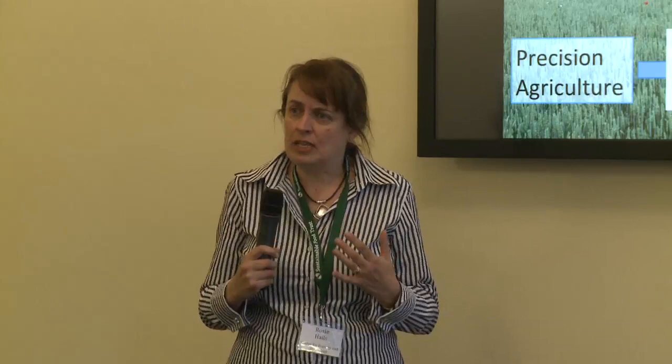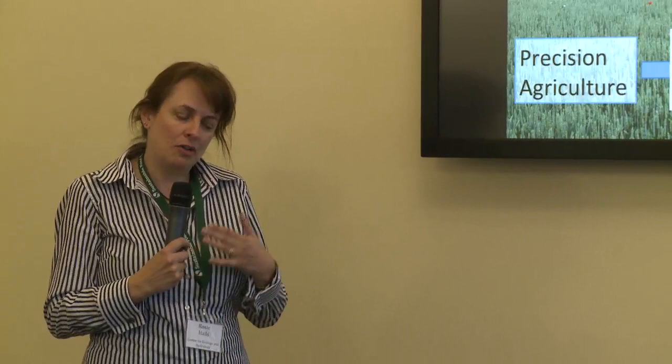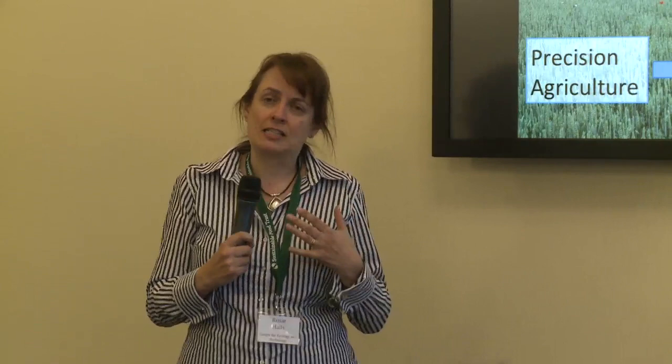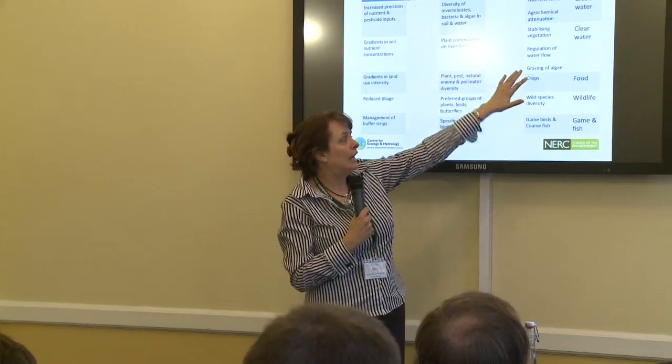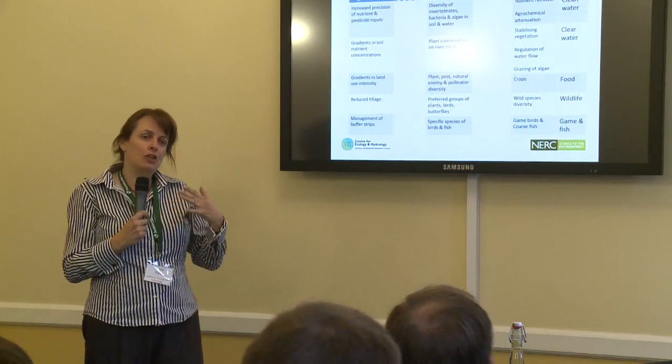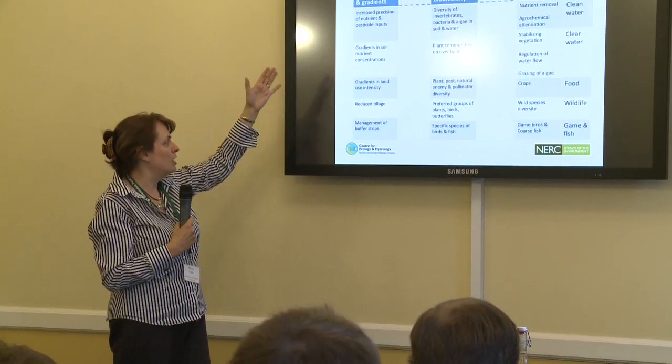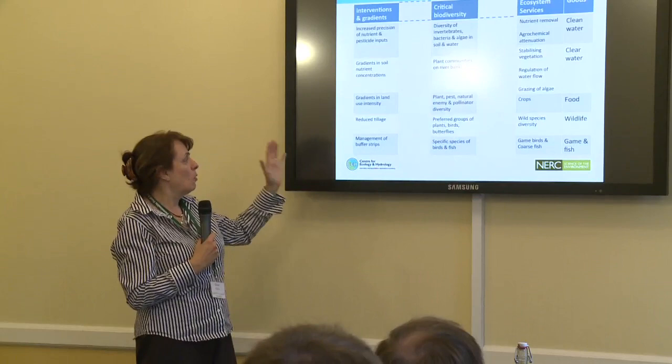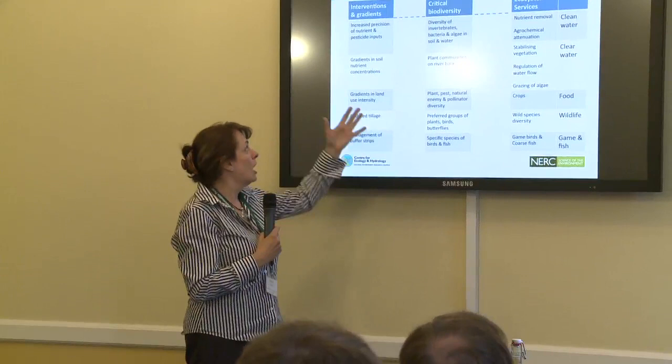We've already heard people talking about the different kinds of ecosystem services that flow from agricultural land. I want to talk about how understanding the way in which biodiversity modulates the link between land management and ecosystem services can help us manage this more effectively. On the right-hand side we have a variety of goods influenced by how we manage agricultural land — not just food, but also wildlife, clean and clear water, game and fish. We're also aware of how different gradients on agricultural land, and different interventions such as reduced tillage, can improve the delivery of these goods. But we need to understand more effectively the role that biodiversity plays in making those links.